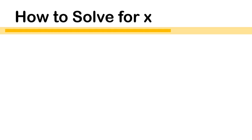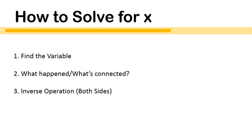Let's get started. How to solve for x with subtraction equations. We're going to follow these steps: find our variable, ask ourselves what happened to the variable or what's connected to it, and then do the inverse to both sides of the equation. Here's my first equation: x minus 3 equals 8. You might think this is pretty easy — I know that 11 minus 3 is 8, and I can solve it in my head. But if you practice with these three steps, you will be able to solve the equations no matter how complicated they get. When they throw in decimals, negatives, and fractions, if you continue to follow these steps, solving those future equations will be a lot simpler. So I highly encourage you to not skip out on these steps.